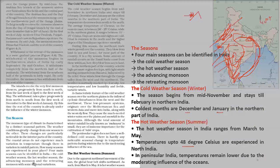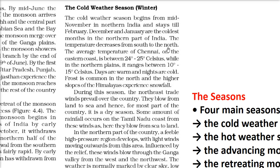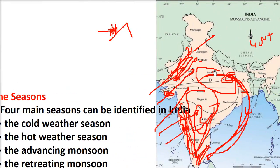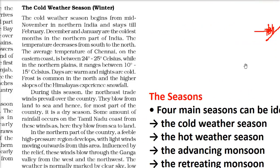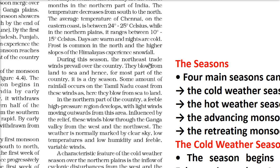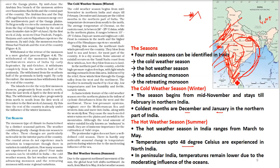In the cold weather season, coastal areas have moderate temperatures of around 24–25 degrees Celsius, while the northern plains — with a continental type of climate — experience 10 to 15 degrees Celsius. The days are warm and nights are cold. In some places you get frost — called 'tushara paat' — and at higher altitudes there is snowfall. During this season, northeast trade winds prevail and blow from land to sea, creating a dry season.